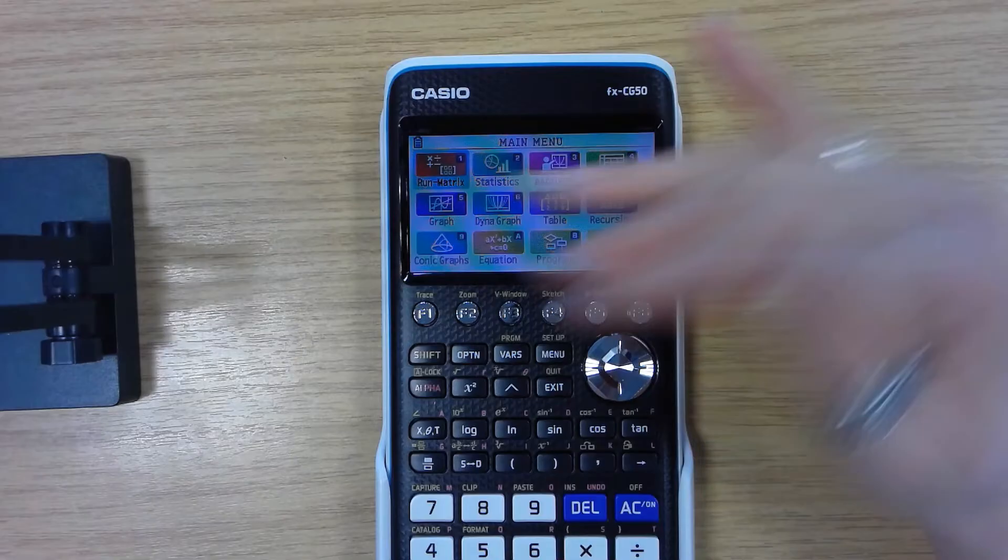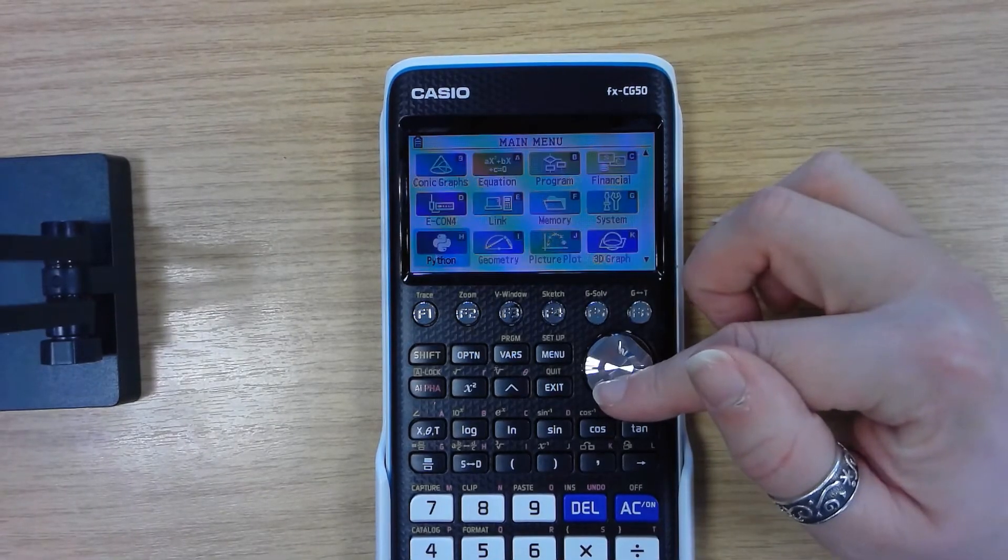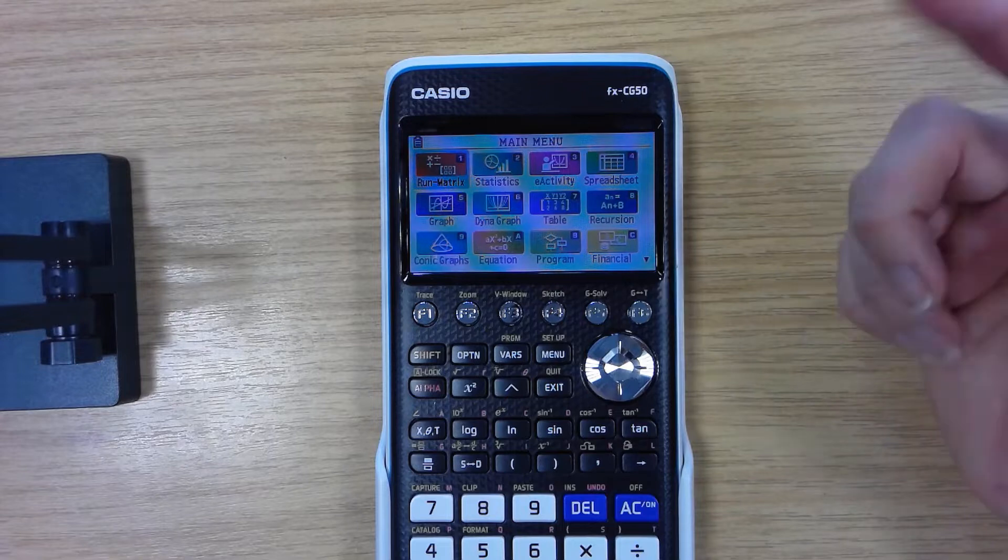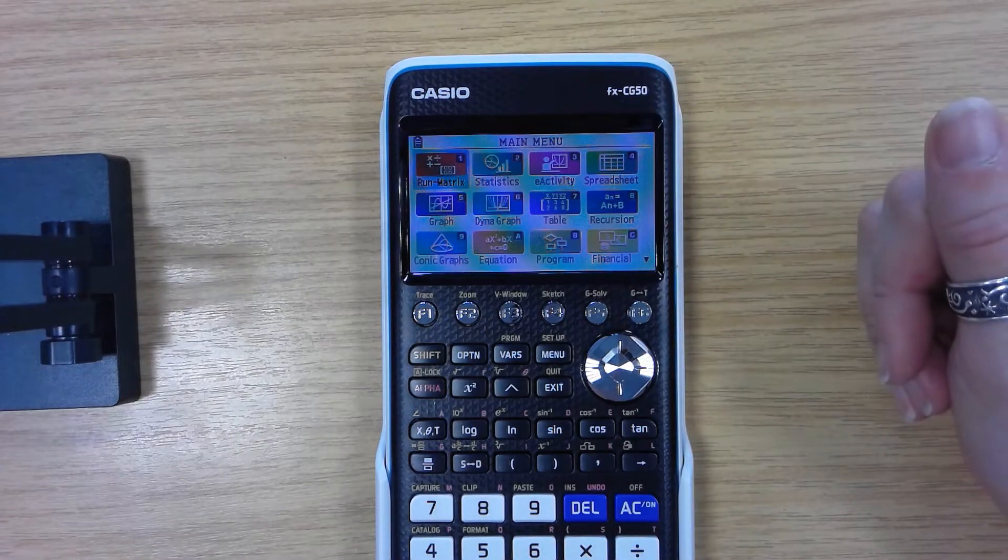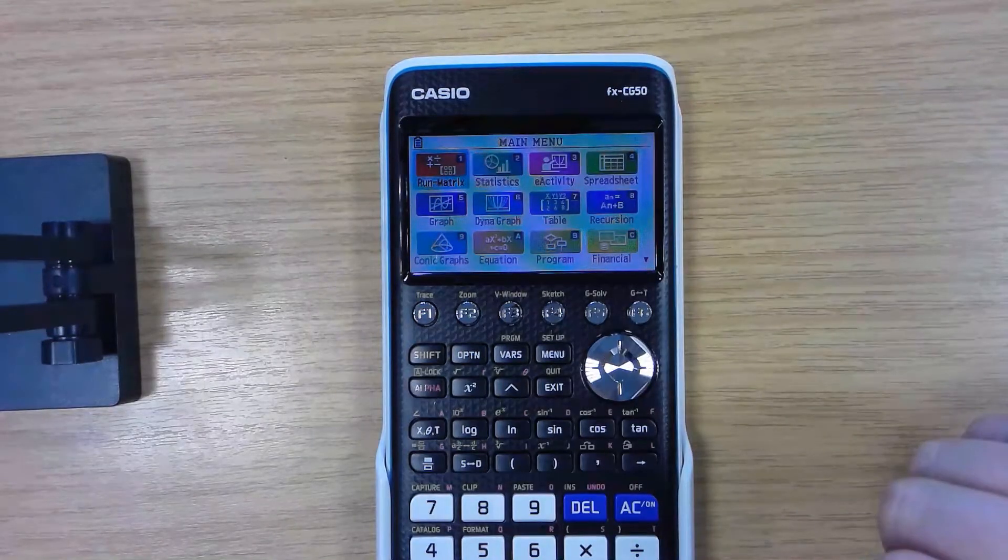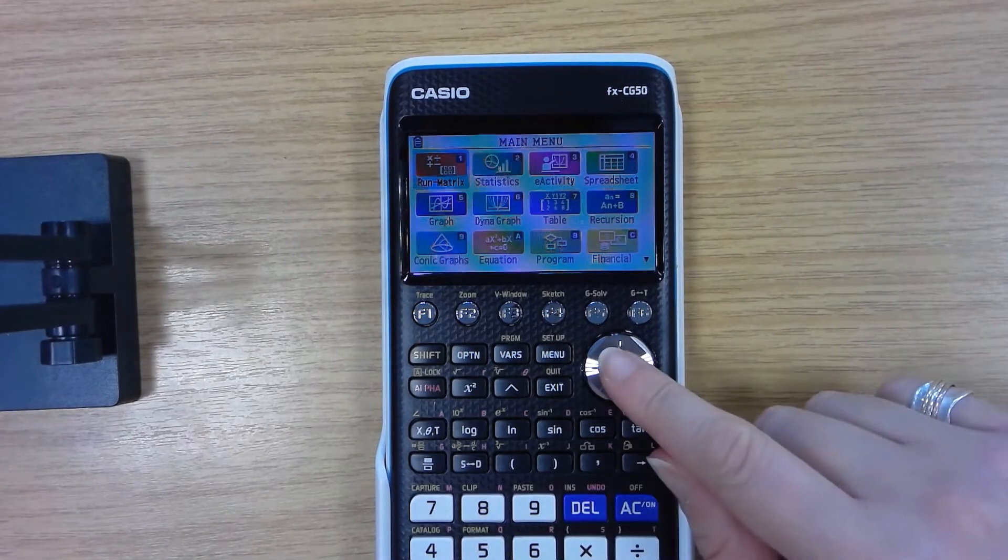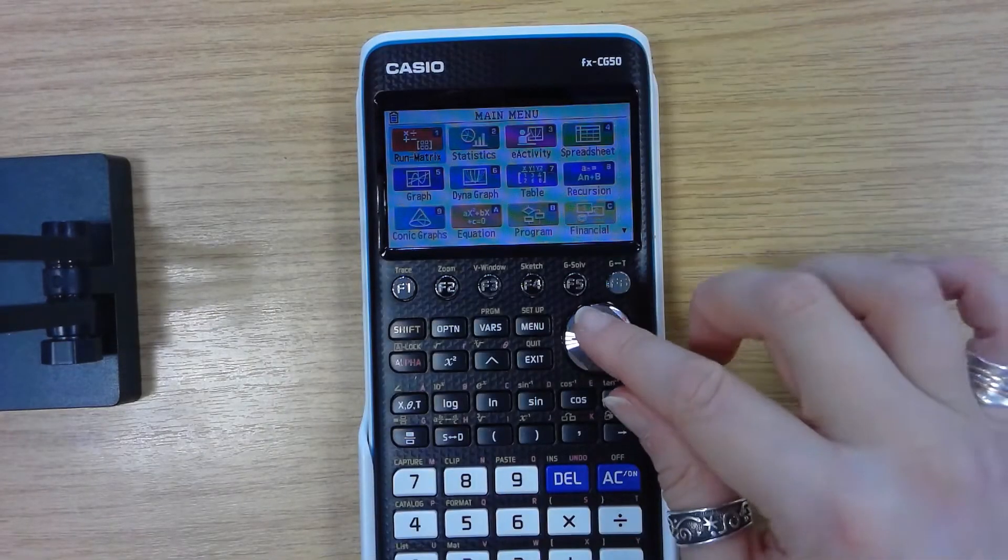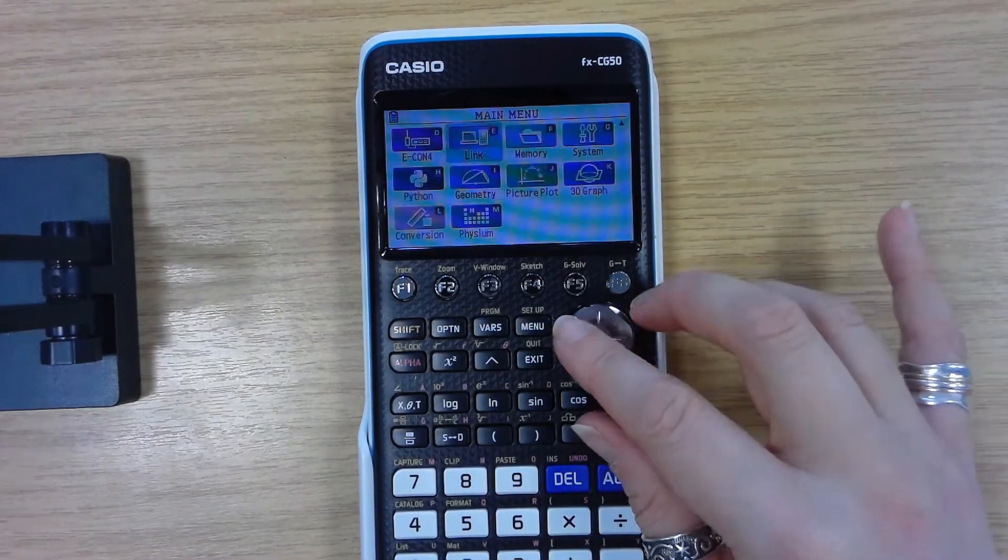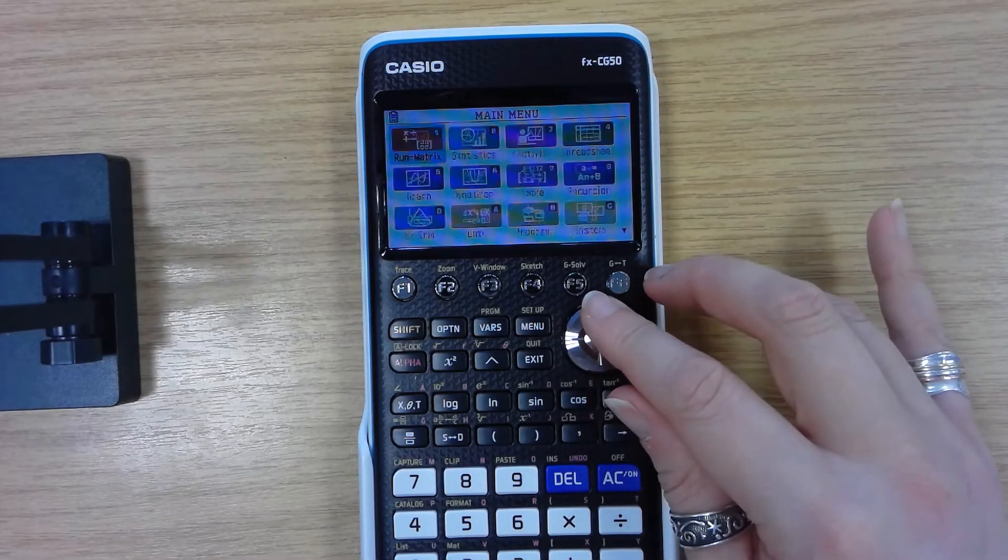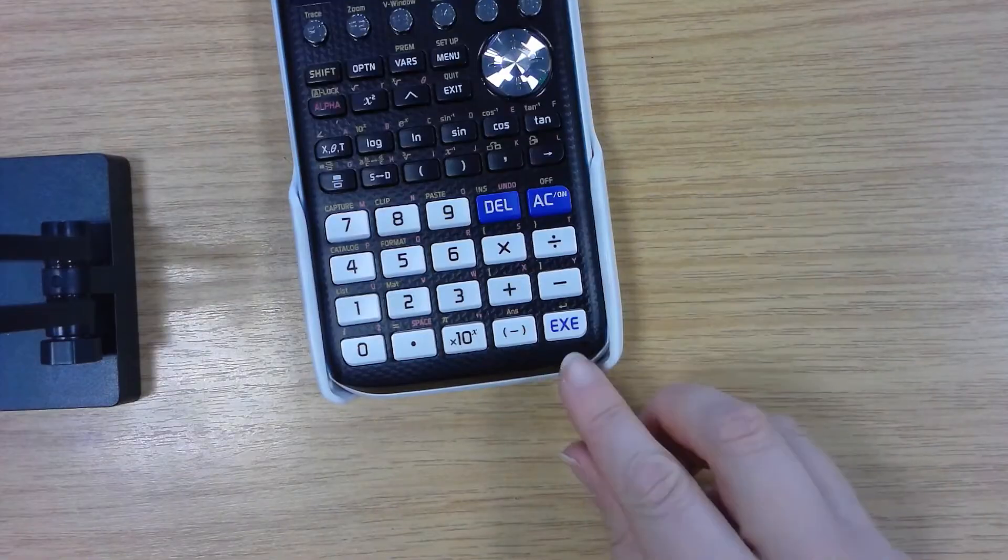Now here you have on your front screen a list of different apps. You'll see in further videos I've made where it talks about how they talk to one another and it saves everything that you do. The one you'll use most of the time is this one here, Run Matrix. So you can open that one up by either pushing the one key or by scrolling to it with the scroll pad and then pressing your new enter which is execute.